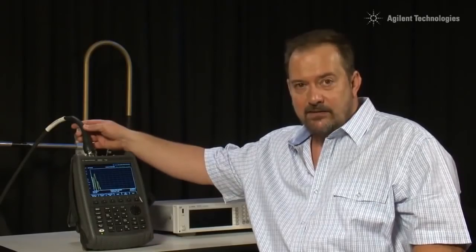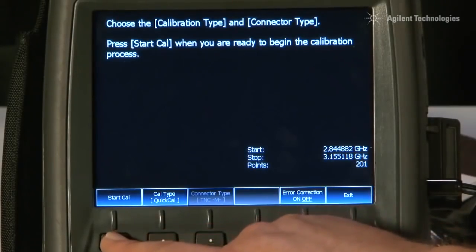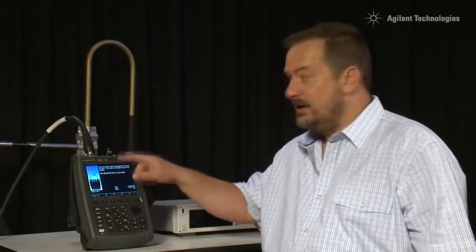I will disconnect the Flylead from the antenna, and I will press Cal, and the CalType is already set to QuickCal, so I will press Start Cal, and we just follow the instructions. Connect your jumper cable, which we have connected,